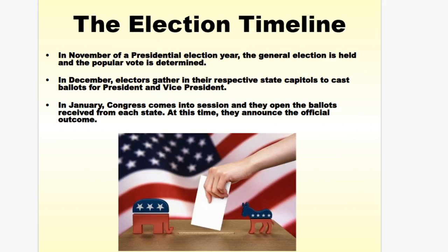The election timeline works as follows: in November of a presidential election year, the general election is held and the popular vote is determined. In December, the electors gather in their respective state capitals to cast votes for the president and vice president. In January, Congress comes into session, opens the ballots received from each state, and announces the official outcome. So in November, there is a statistical possibility that who we vote for that night might not win the presidency.